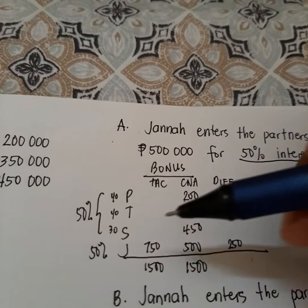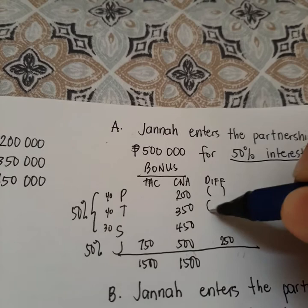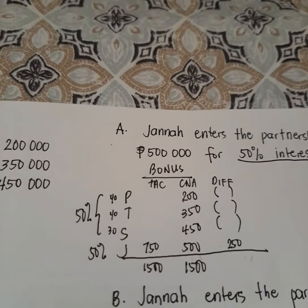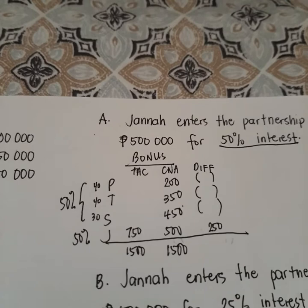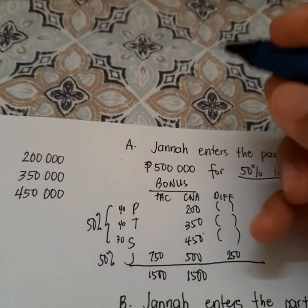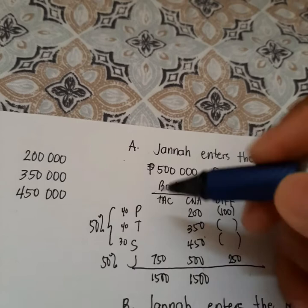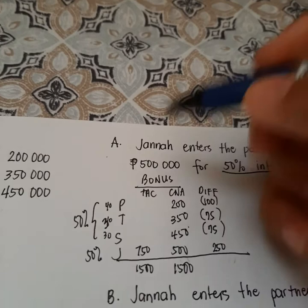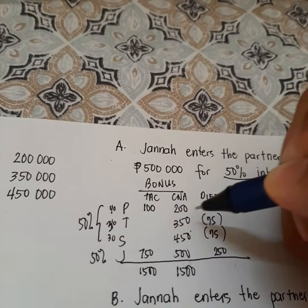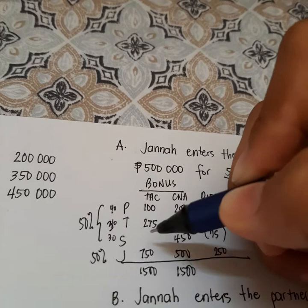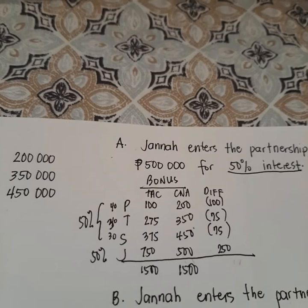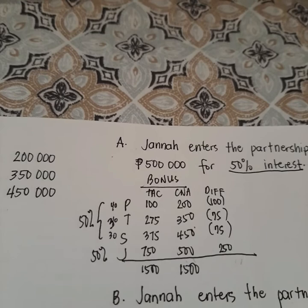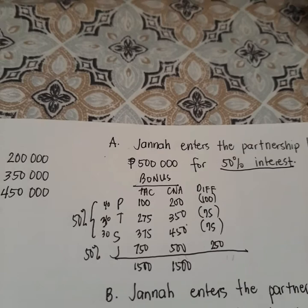There is a bonus of 250,000 from old partners to JANA, so negative 250,000 total is distributed among existing partners. 250,000 times 40% is 100,000 for PAM, and 250,000 times 30% is 75,000 each for TAN and SHINE. The new agreed capital for PAM is 100,000, for TAN is 275,000, and for SHINE is 375,000. Adding those with JANA's 750,000 gives a total of 1,500,000.